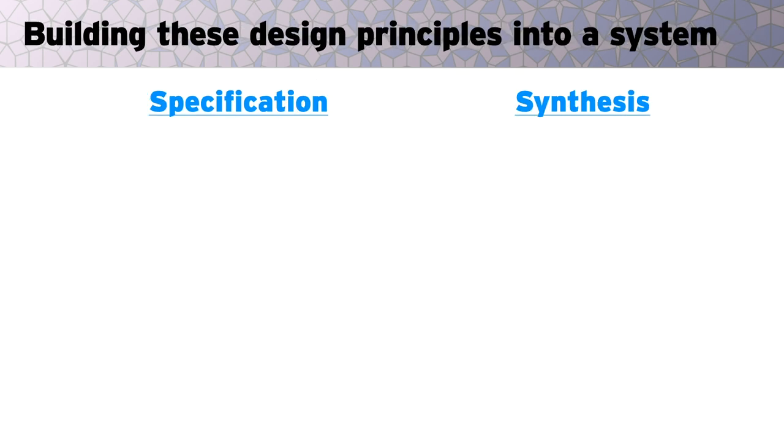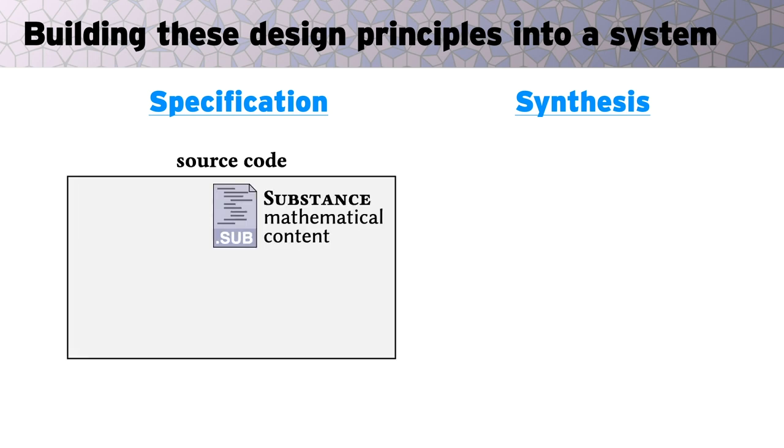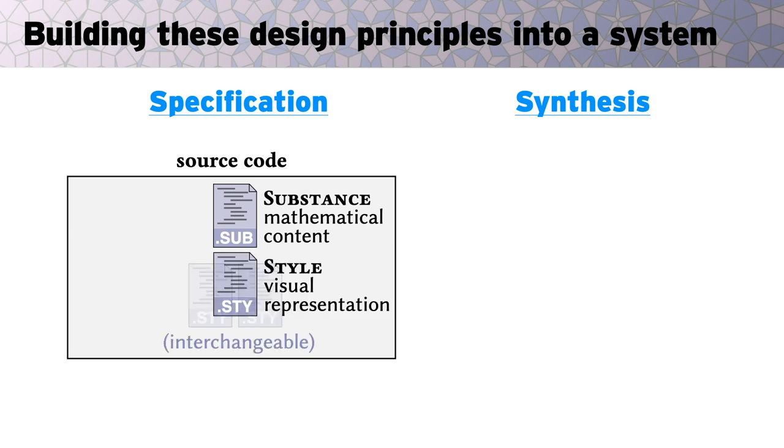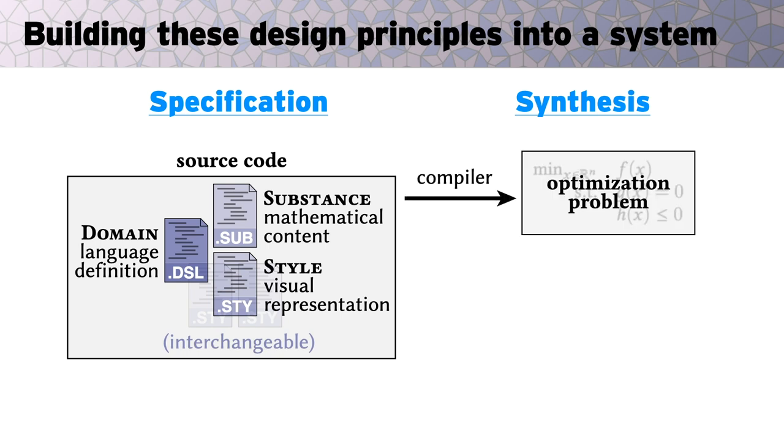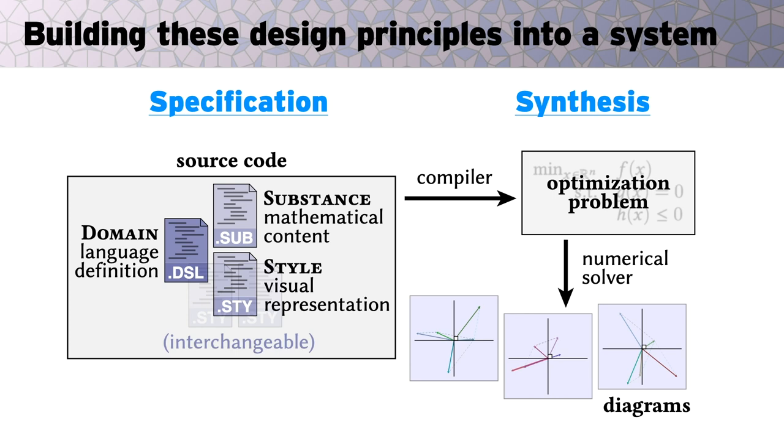Our end-to-end pipeline then looks like this. The input consists of three source files, a substance program, which specifies some particular mathematical content, an interchangeable style program, which specifies the mapping from mathematical to visual objects, and a domain schema, which defines the available mathematical objects. This code then gets compiled into an optimization problem, which is then solved to create one or more diagrams.